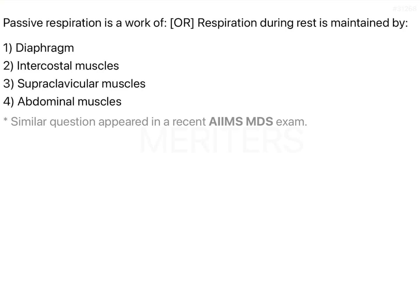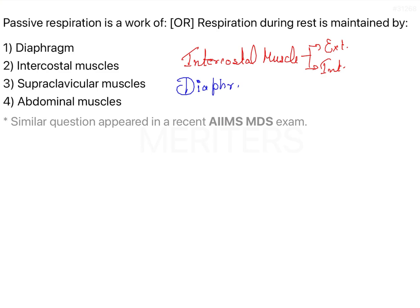First of all, we should talk about the various muscles involved in respiration. There are intercostal muscles, which can be both external and internal intercostal muscles. The second most important muscle is the diaphragm. Then we have accessory muscles, and the accessory muscle that helps in forceful respiration is the abdominal muscles.